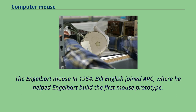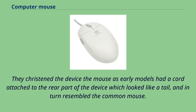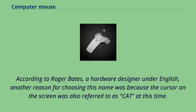In 1964, Bill English joined ARC, where he helped Engelbart build the first mouse prototype. They christened the device the mouse — early models had a cord attached to the rear part of the device which looked like a tail, resembling the common mouse. According to Roger Bates, a hardware designer under English, another reason for choosing this name was because the cursor on the screen was also referred to as cat at this time.